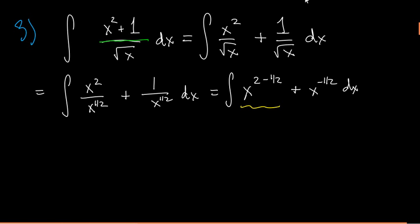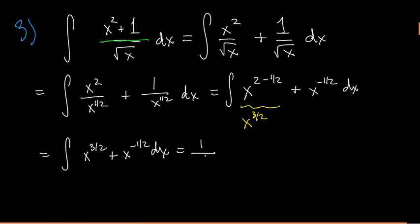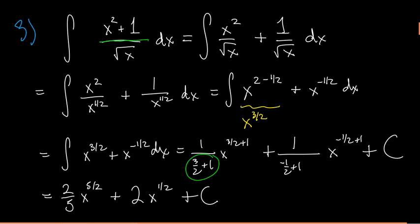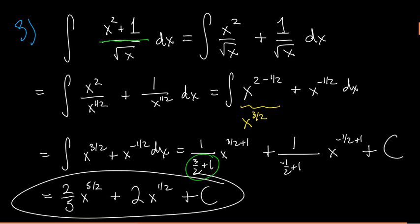Now we integrate x to the three-halves and x to the negative one-half. Applying the power rule: for x to the three-halves, the power plus one is five-halves, so the reciprocal is two-fifths, giving two-fifths x to the five-halves. For x to the negative one-half, the power plus one is one-half, so the reciprocal is two, giving 2 times x to the one-half. Final answer: two-fifths x to the five-halves plus 2x to the one-half plus c.